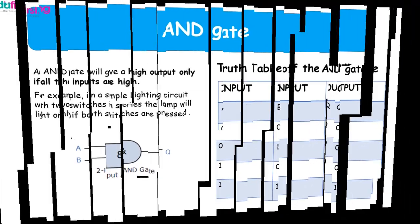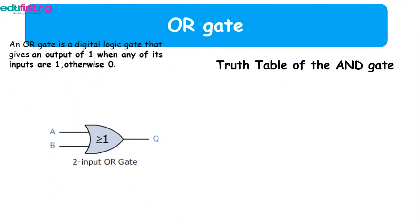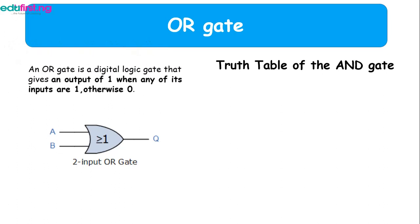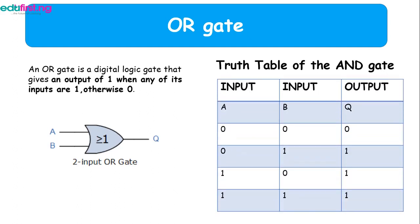Now we consider the OR gate. For the OR gate, it's a digital logic gate that gives an output of 1 when any of its inputs are 1, otherwise 0. That's for the truth table of the OR gate. If any of the inputs is on, the output will be on. So we have three cases of ON outputs here.